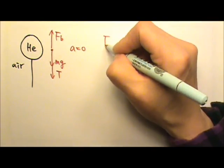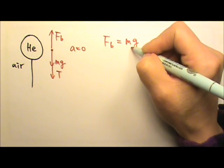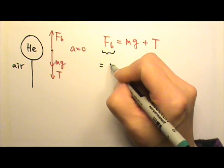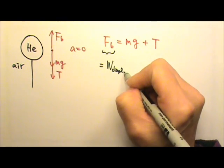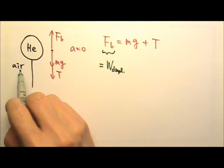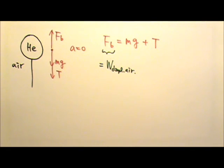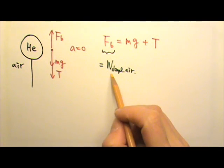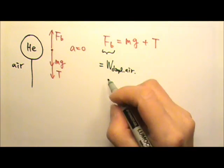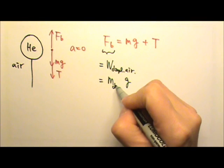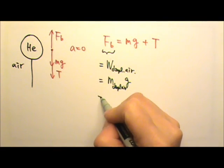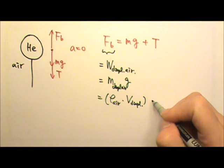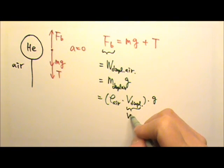Since acceleration is zero, the buoyant force must equal the mg of the balloon plus the tension in the string. And of course, the buoyant force equals the weight of the displaced fluid — the fluid displaced by the helium balloon is the air. So to find the tension in the string, we just need the mass of the balloon and the weight of the displaced air. The mass of the displaced air equals the density of the air times the volume displaced, and the volume displaced is the volume of the balloon.